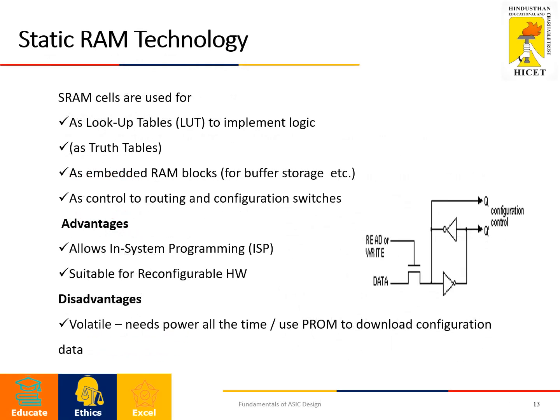SRAM cells are used for lookup tables to implement logic (as truth tables), as embedded RAM blocks for buffer storage, and as control routing and configuration switches. The architecture uses read and write transistors with back-to-back inverter connections. Merits include in-system programming and suitability for reconfigurable hardware. The drawback is that it is volatile and requires power at all times to retain the configuration data.